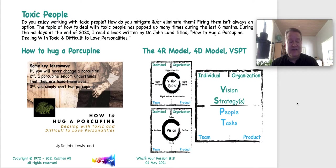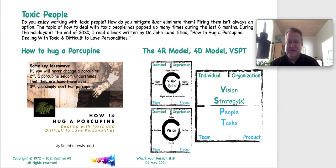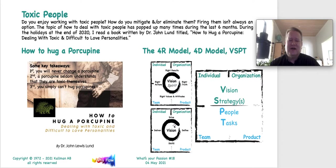It didn't take very long for the agitator to become agitated. I also used the 4R model in order to get to her core truth, and to understand her values and attitudes, and how to mitigate those. Then, using the idea of distilled agreement in order to kill the politics. Life's too short to put up with that kind of politics. So combining VSPT with the 4R model and the 4D model successfully mitigated her.